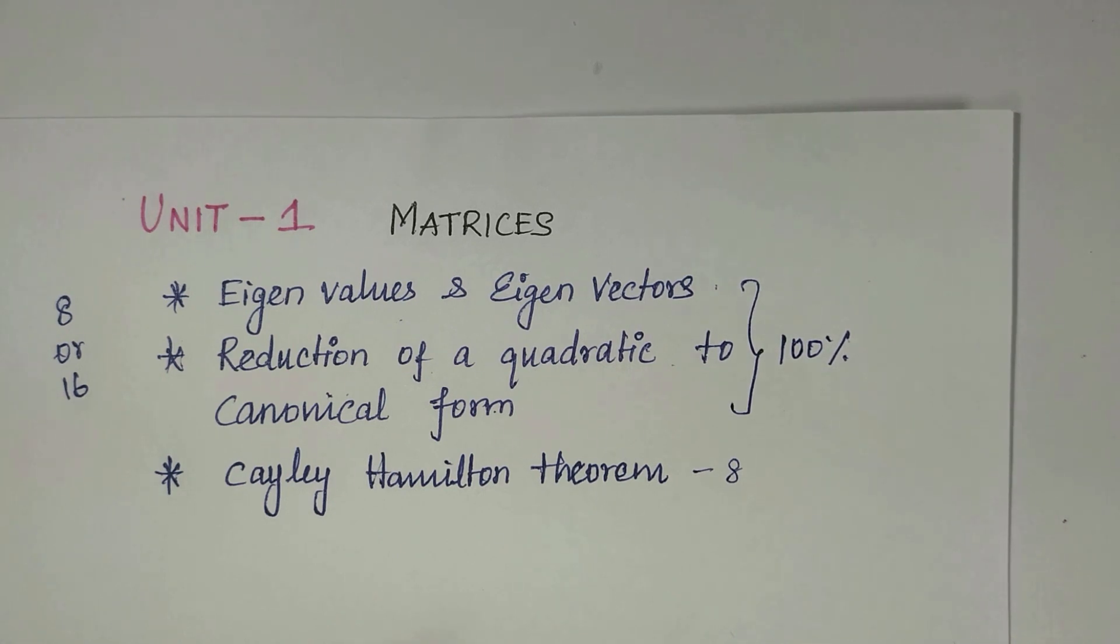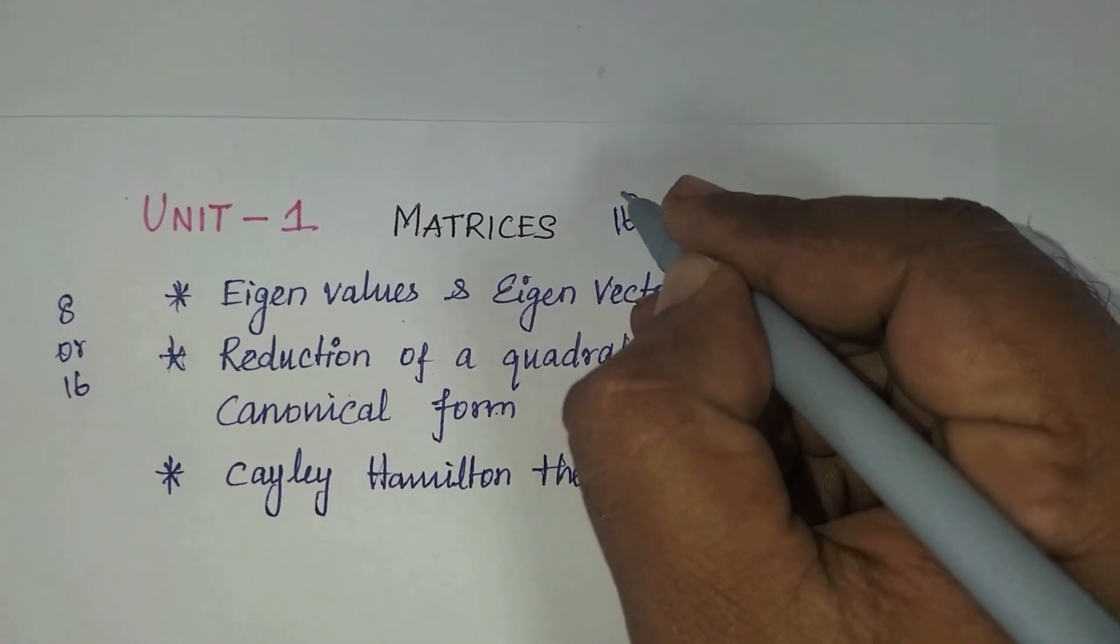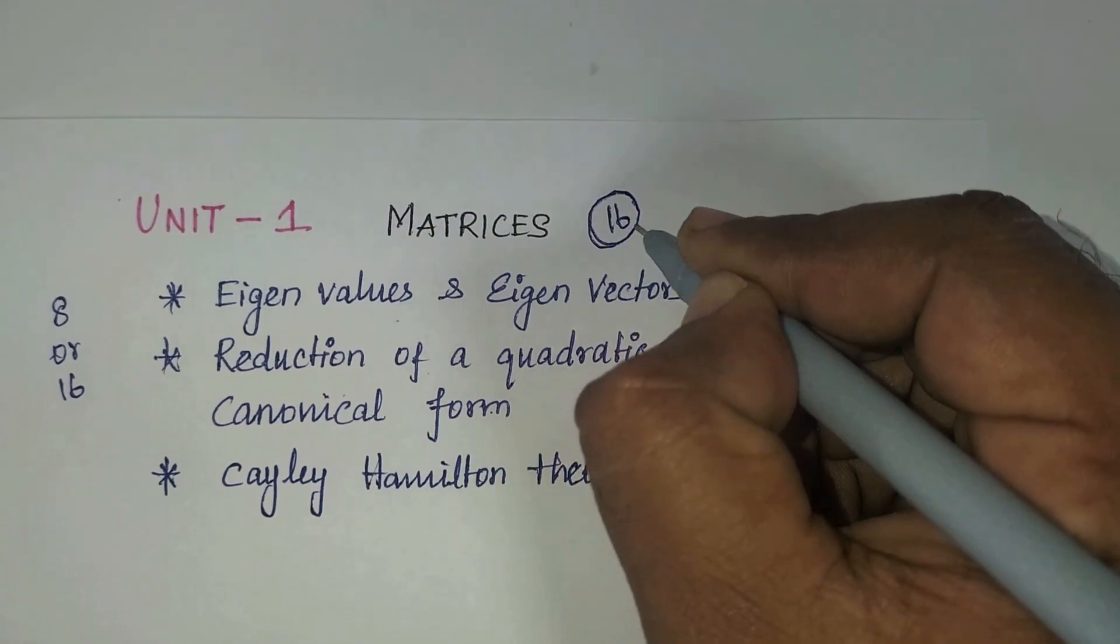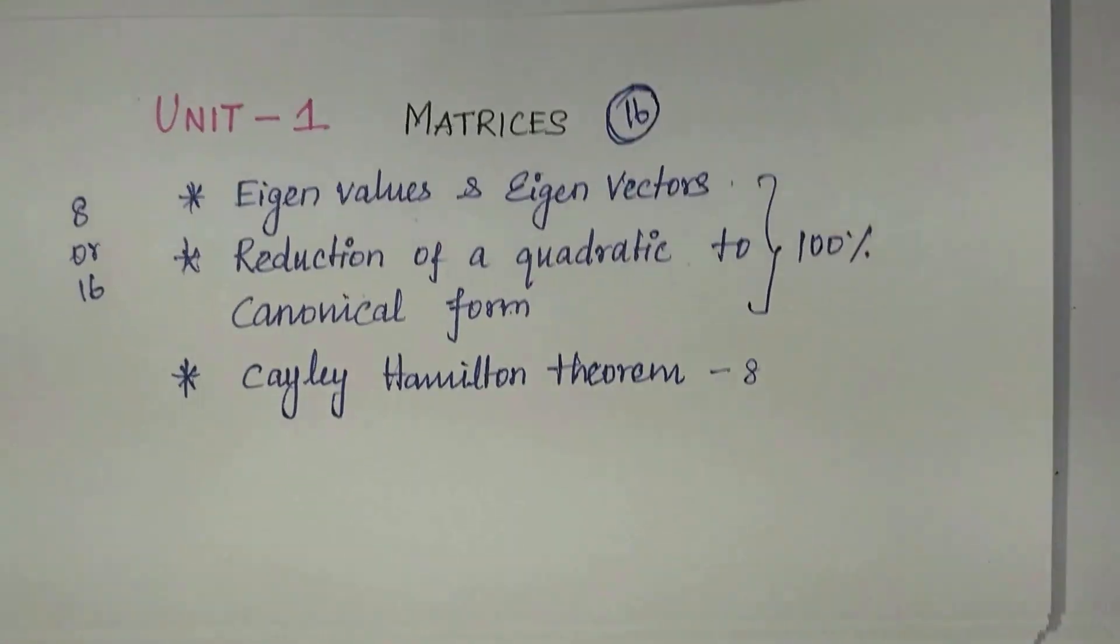My suggestion is: first, you can complete this. In the worst case, you will get one 8 marks, or definitely you will get one 16 marks in matrices. There is no chance you have to score a minimum 16 marks. Otherwise, there's no chance. If you are not attending matrix problems, you cannot pass in Matrices and Calculus model paper.